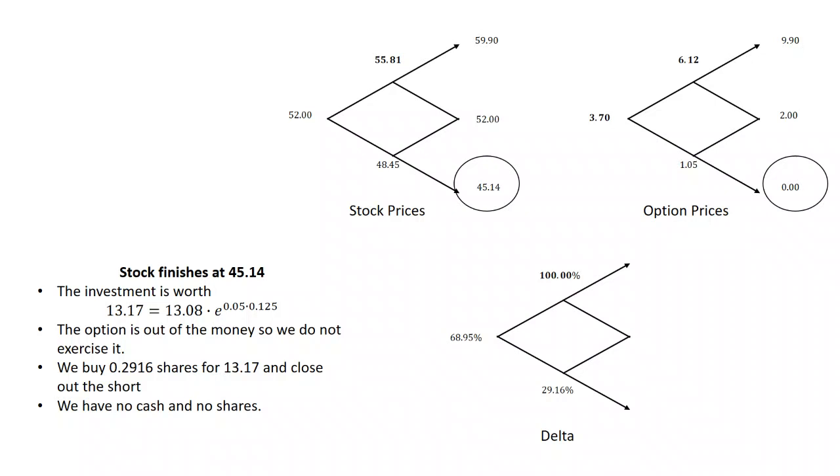If this were a put rather than a call, we could follow the same strategy. The deltas would be negative, but we would do the same thing. This is actually the power of these binomial trees in that it tells us what to do. It allows the dealer to buy or sell the option at the fair value and gives them a strategy for locking in that fair value, regardless of what the stock does.